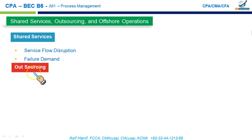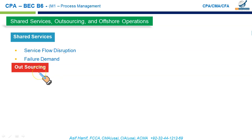Outsourcing means contracting services to an external provider. We can outsource accounting work, legal work, transaction processing systems, or internal audit functions — many non-core areas can be performed by external providers. While this can achieve efficiencies, there are certain risks to be aware of. First, quality risk — since you are outsourcing a product or service, quality is not in your control, and the external provider might compromise on quality.